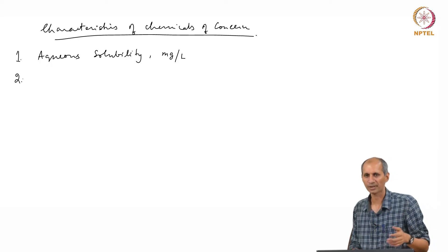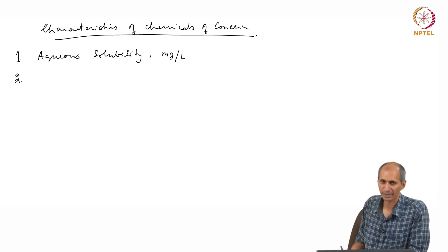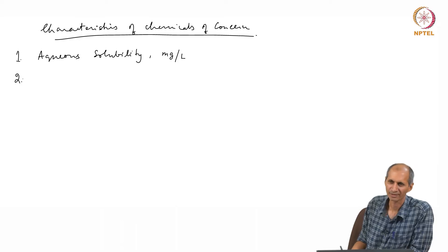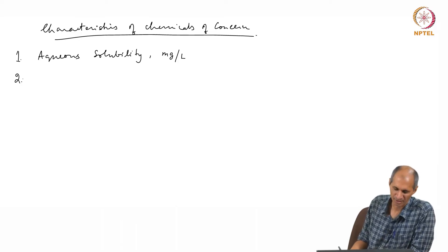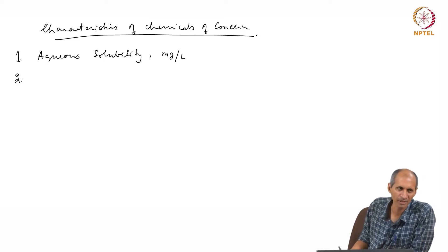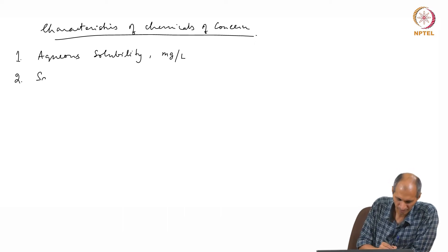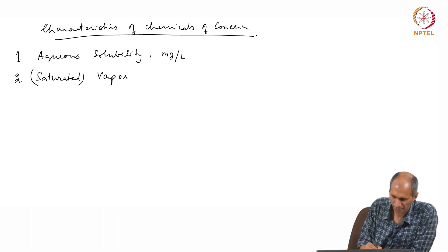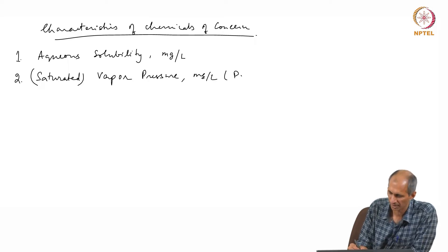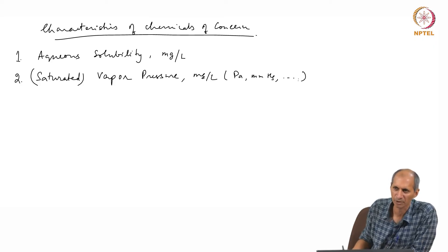Like aqueous solubility, corresponding to air and vaporization — what is the property of a chemical that indicates how volatile it is? Vapor pressure, or saturated vapor pressure. We will give it in milligram per litre, but you can also have other units like Pascal, millimetre of mercury, and so on.